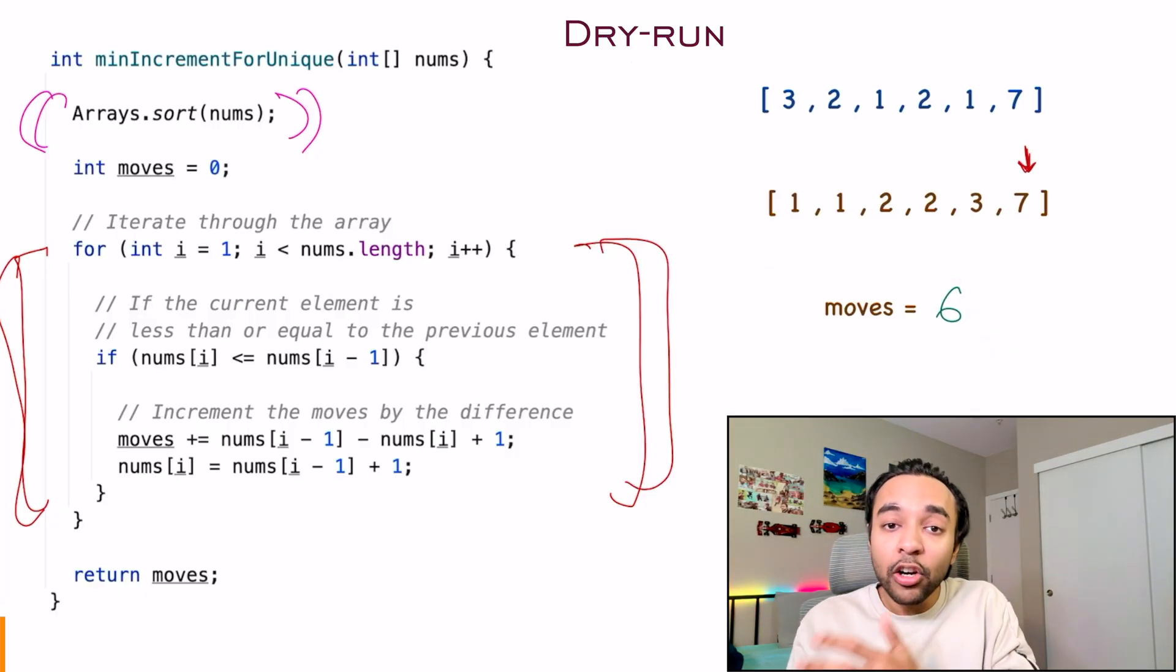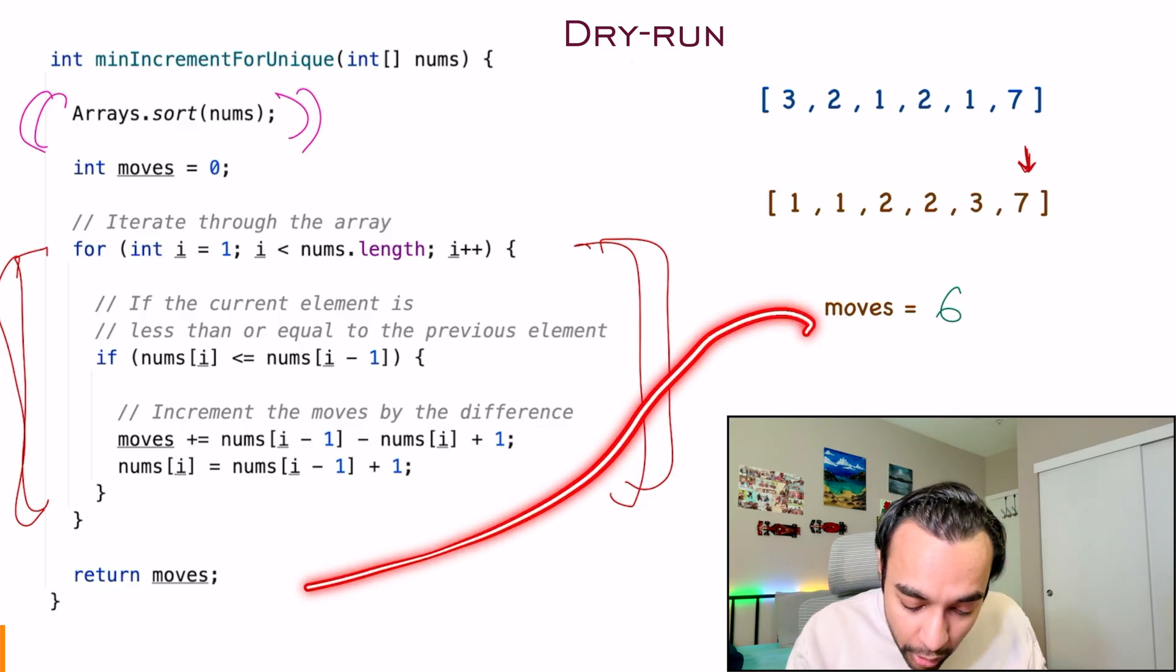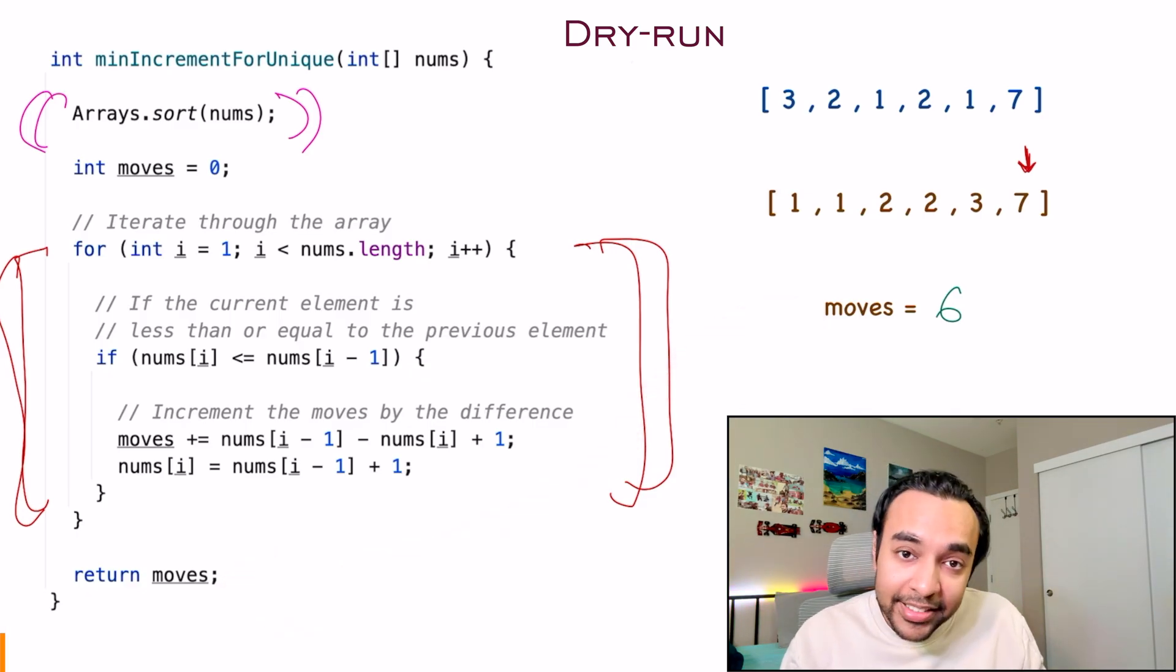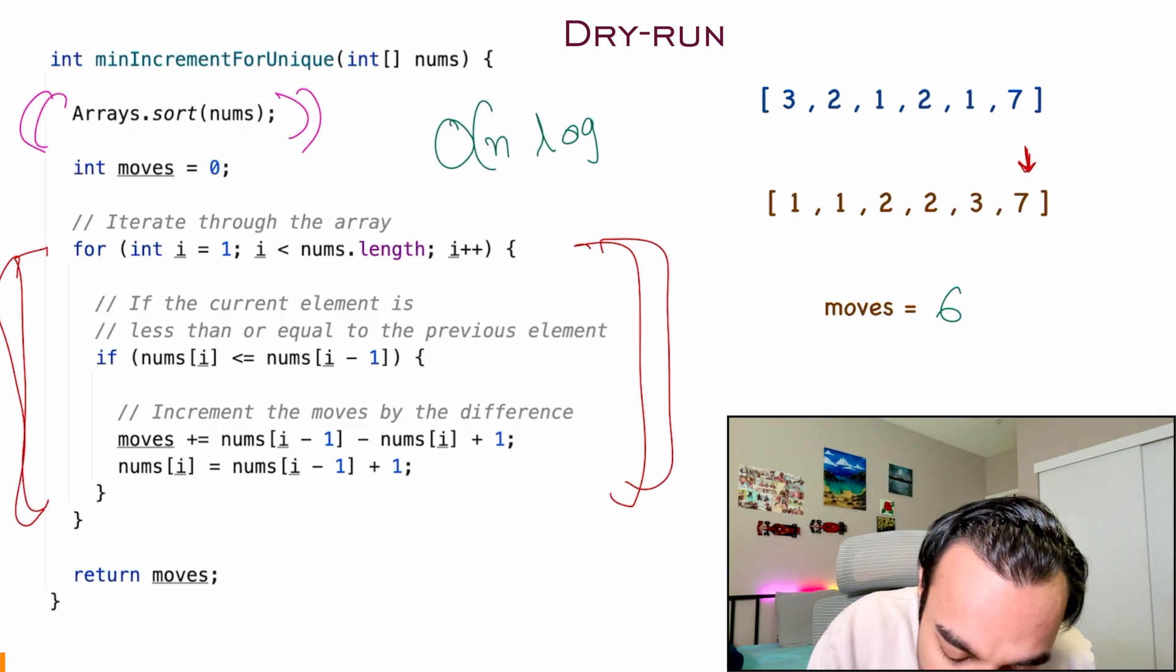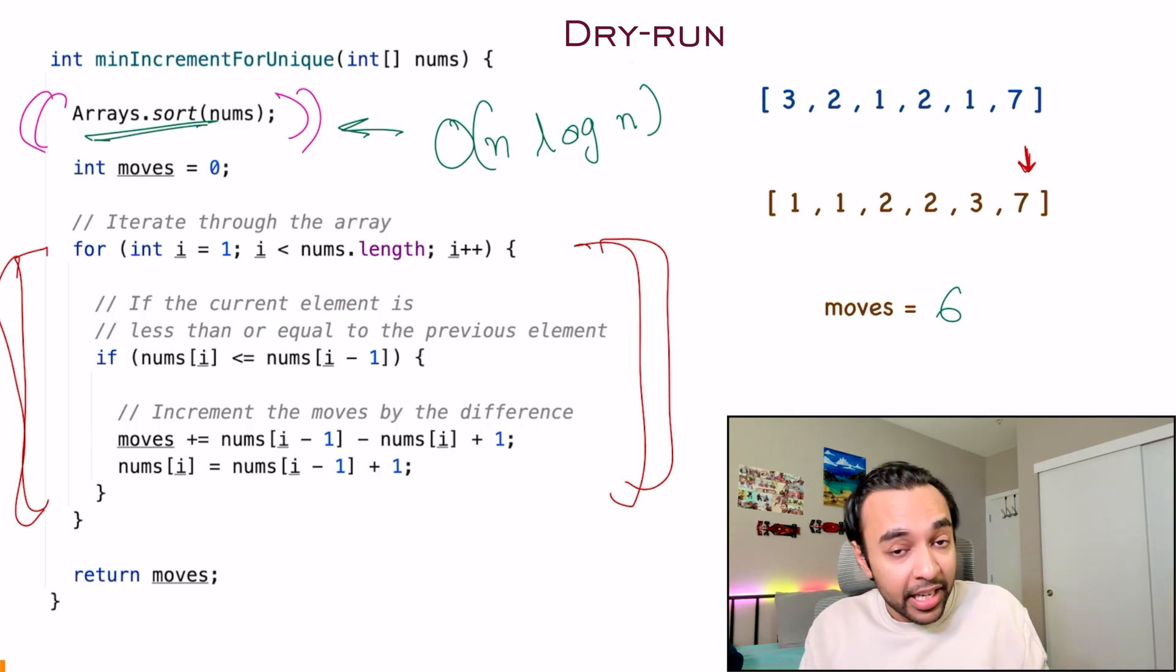At the very end, the value of moves will be 6 and you're going to return this as the final answer. If you notice, the time complexity of this particular solution will be order of n log n because that's the time you take to sort your array with the quicksort algorithm. And the space complexity of this solution will be order of 1 because you're not taking up any extra space and everything is happening in constant space.